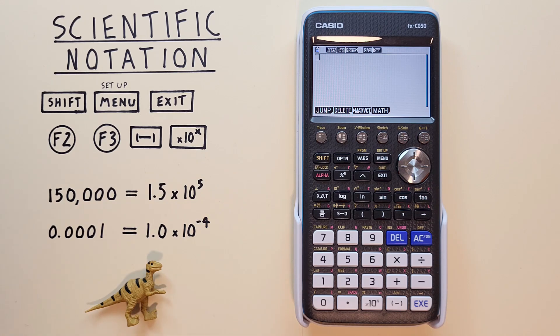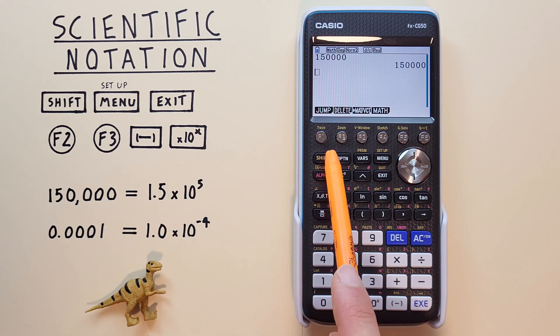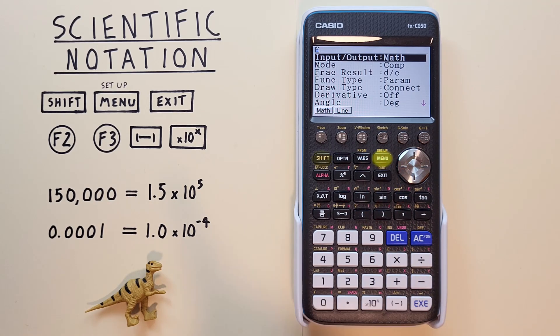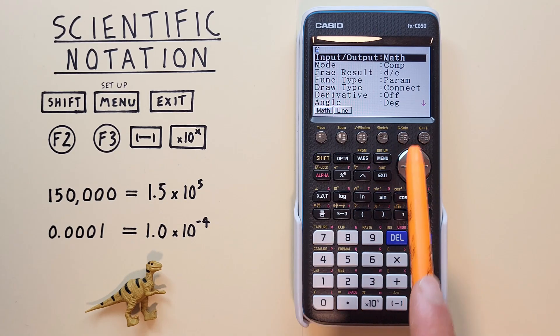Normally when we enter these numbers in our calculator, they're displayed as written. But if we want to convert them to scientific notation, we press Shift Menu key for the Setup menu.